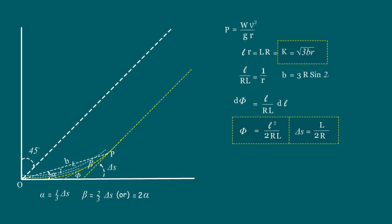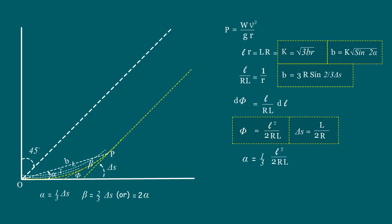Now the formula to get the value of B equals 3R·sin(2/3·delta S). This formula helps to calculate the total length of B. There is another formula to get the value of B: B equals K·√(sin 2α). This formula helps to calculate the intermediate length of B to fix the intermediate points on the spiral curve. Now let us derive the formula to get the value of alpha. As we understand from the characteristics of the spiral, alpha equals one-third of delta S. We already derived that delta S equals L²/2RL. That means alpha equals L²/6RL, and this value is in radians.